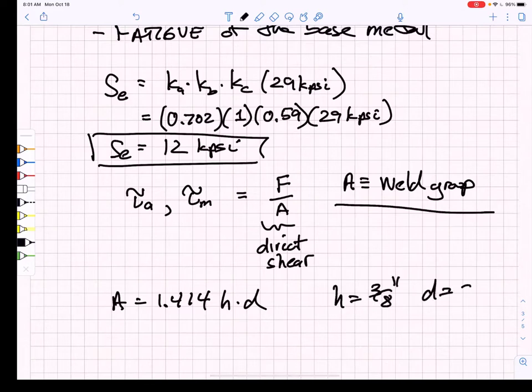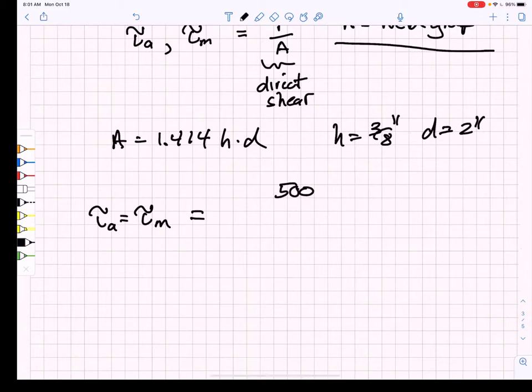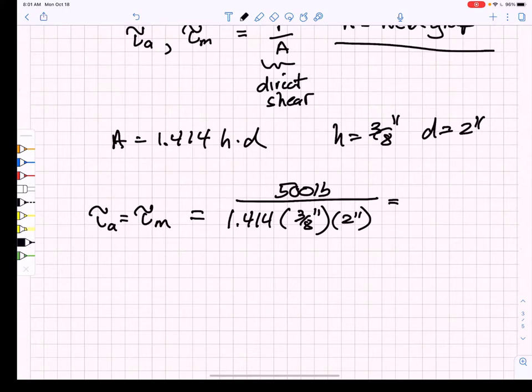We go to the table in the textbook, and the weld group is number 2, and our area is 1.414 HD. A is 1.414 HD. Our H is 3/8 of an inch, and our D is 2 inches. Our tau A, which is equal to our tau M, is just going to be our load, 500 pounds, divided by 1.414 times 3/8 of an inch times 2 inches. That gives me a stress amplitude and a mean stress of 471 pound per square inch.